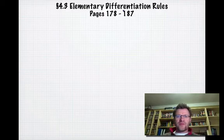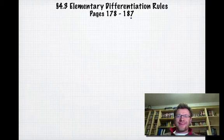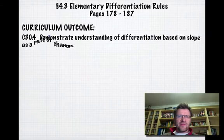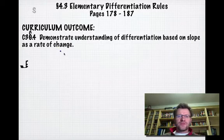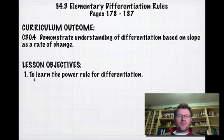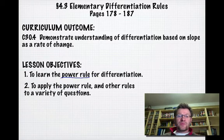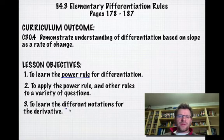We're looking at section 4.3, elementary differentiation rules today, on pages 178 to 187 in your text. Our curriculum outcome is to demonstrate understanding of differentiation based on slope as a rate of change. Our lesson objectives are: one, learn the power rule for differentiation; two, apply the power rule and other rules to various questions; and three, learn different notations for taking the derivative.